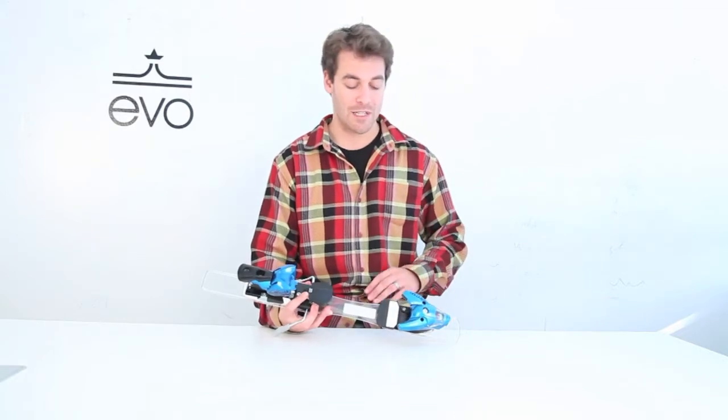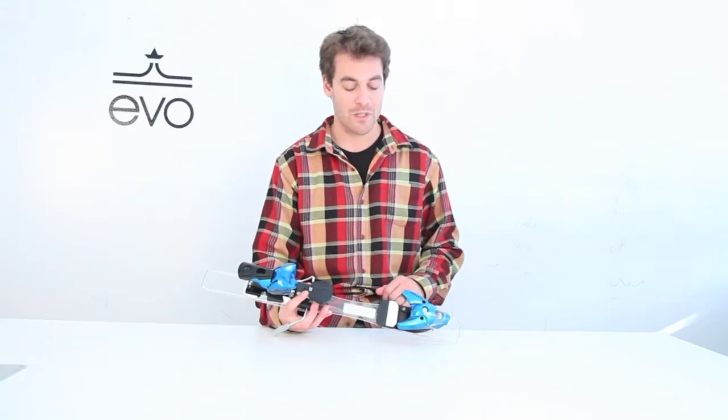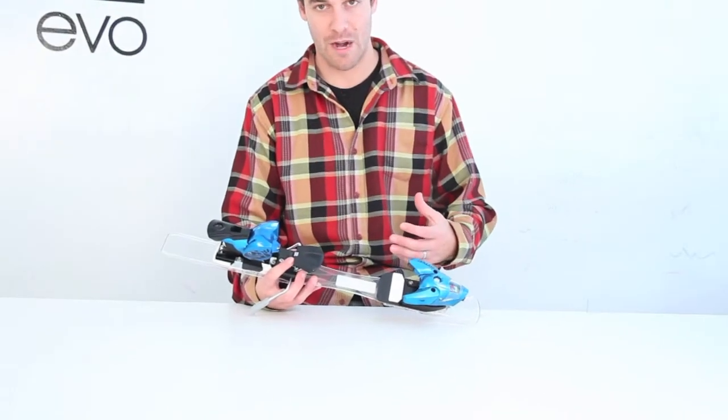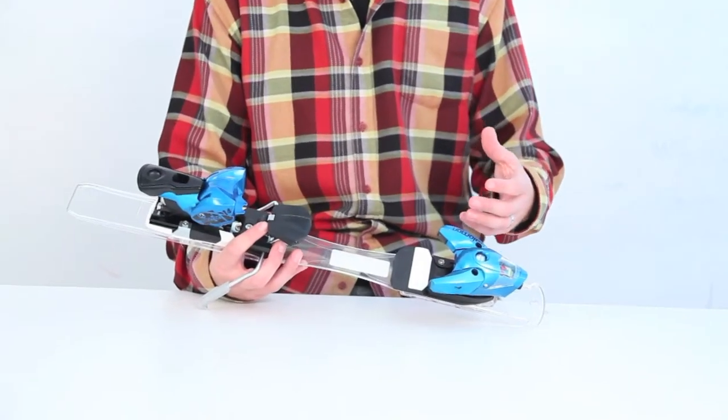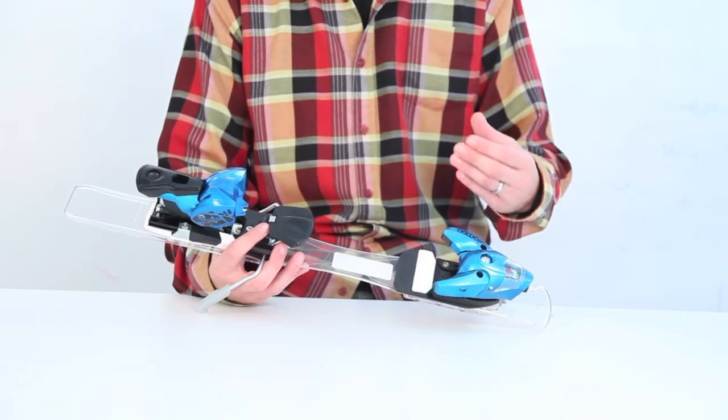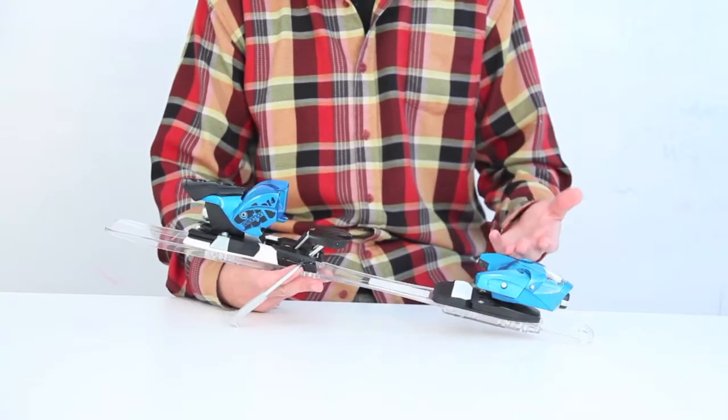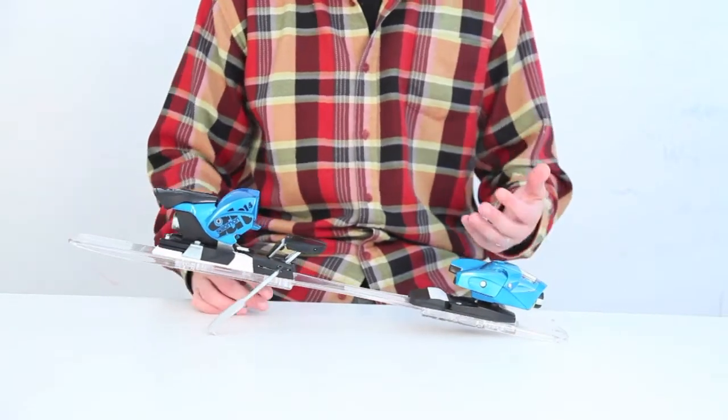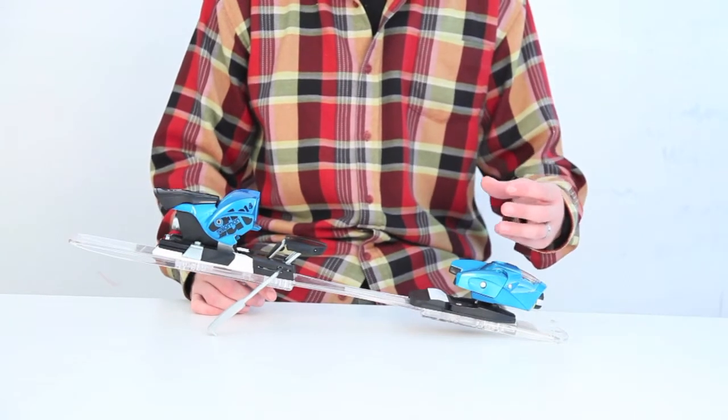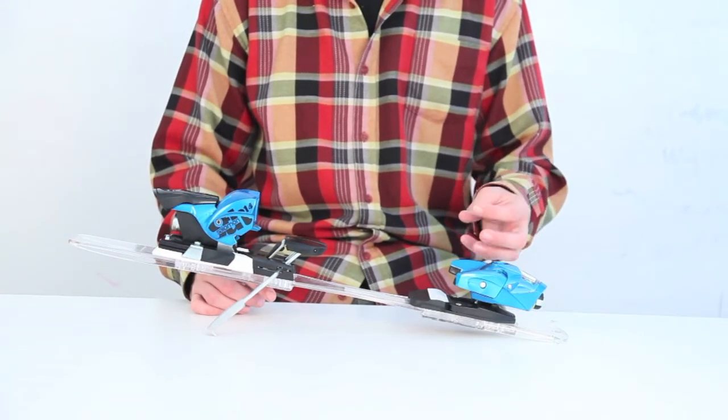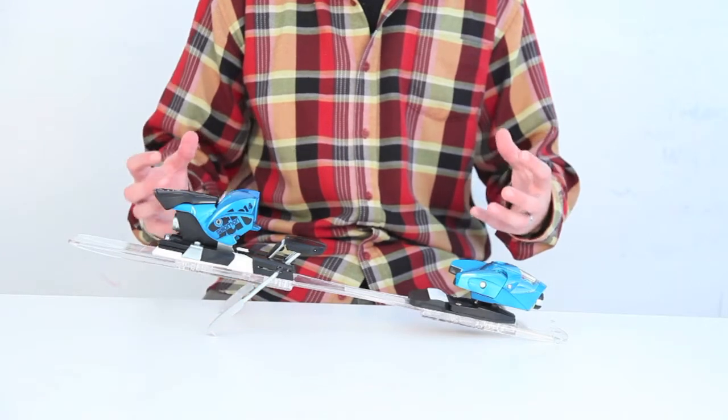So the STH has the driver toe here, it's huge wings that wrap around the boot for great lateral transmission energy, and they also have micro adjustments in the wings as well as a toe height adjustment, so a certified binding technician can really dial this binding into your boot, get it really fit for no play and a really solid hold.